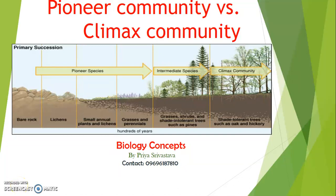Hello friends, we are discussing our module second, that is ecology. Today I am going to discuss a very key point, a very hot spot topic, that is pioneer community versus climax community. As you can see in this figure, primary succession means pioneer species, then intermediate species, and finally climax community.